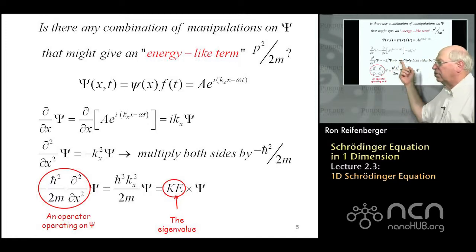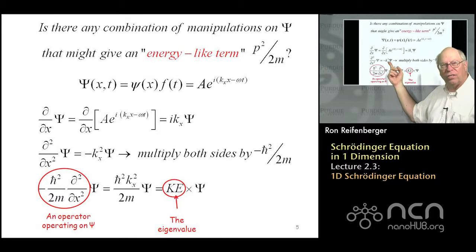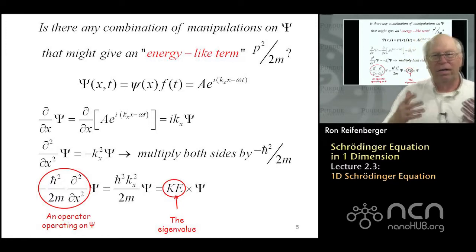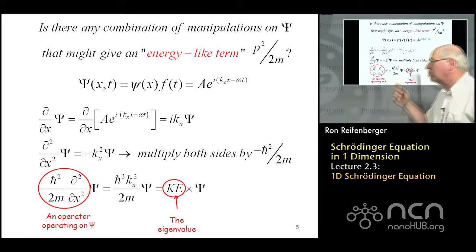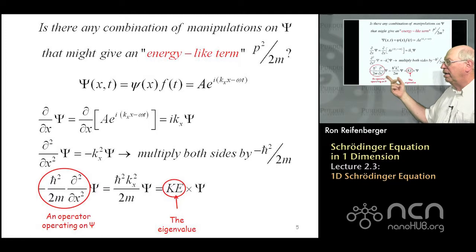Okay, and then you say to yourself, well wait a minute, this isn't a kinetic energy term, because a kinetic energy term is going to have to involve h-bar squared k squared over 2m. So what we just do is we multiply both sides of this equation by minus h-bar squared over 2m. And then we end up with this eigenvalue problem here, where the kinetic energy of the particle now becomes the eigenvalue.